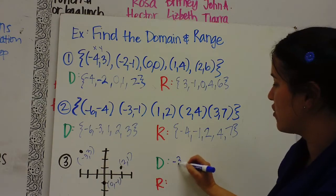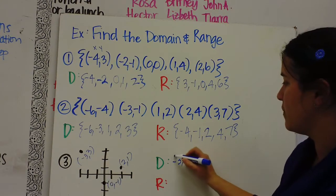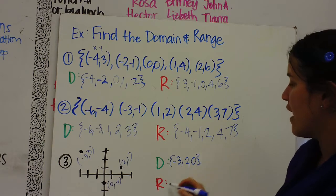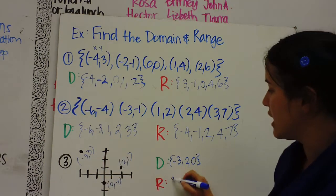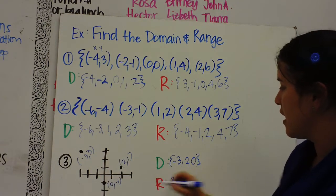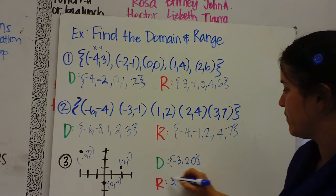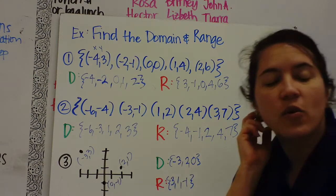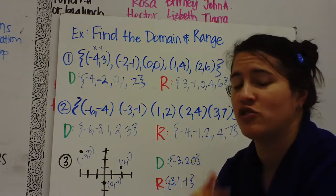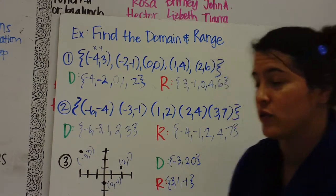The domain are the X values, so negative 3, 2, and 0. And the range values are 3, 1, and negative 1. So that was quick, but that's how you find the domain and range. You just take the X coordinates and the Y coordinates.